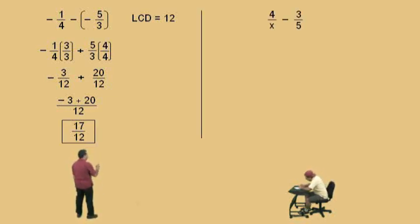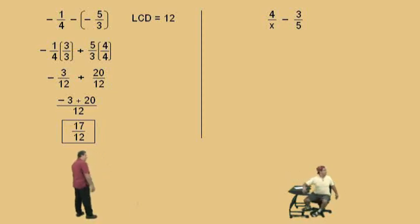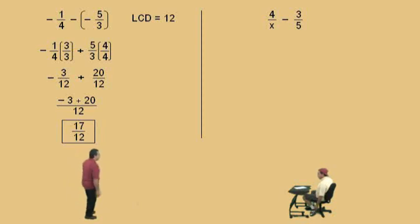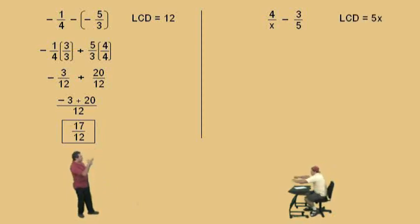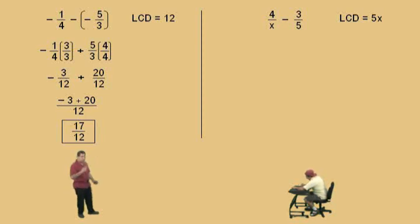Four over x subtract three over five. Don't get scared — here we have a variable in the denominator. We just threw one in to keep you on your toes. What do you think the lowest common denominator is? Five x — that's right, five x. Most people just see it and say five times x is five x. Remember, the lowest common denominator is the smallest quantity that both denominators will divide evenly into. We need an x to divide into that five x, and it will work.